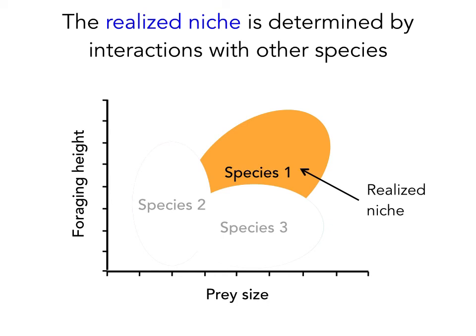Other interactions might also affect the evolution of a species' niche. Predation might be one that would certainly reduce the size of the niche for a particular species. We'll be talking more about competition and predation in subsequent lectures, and will revisit this concept of the realized niche when we do.